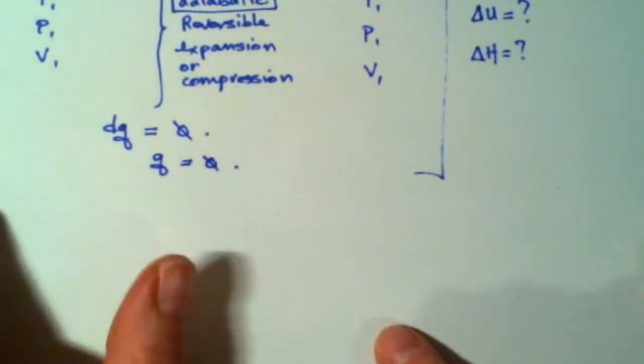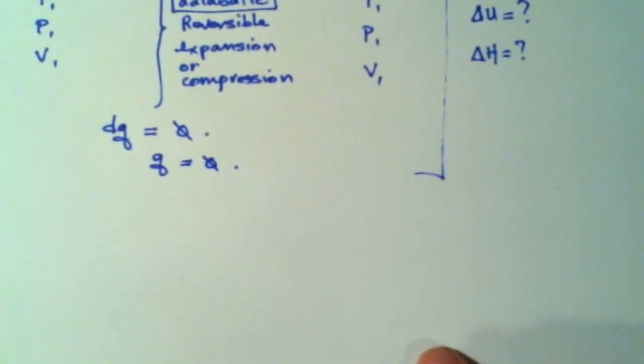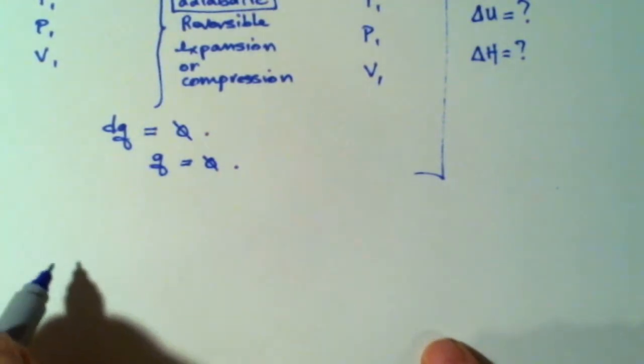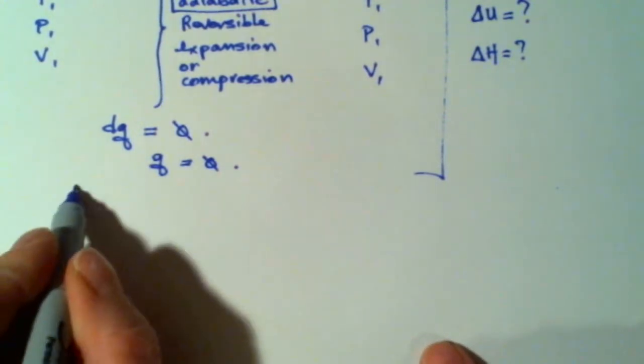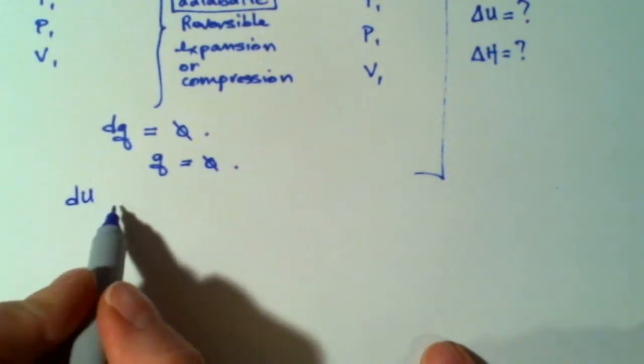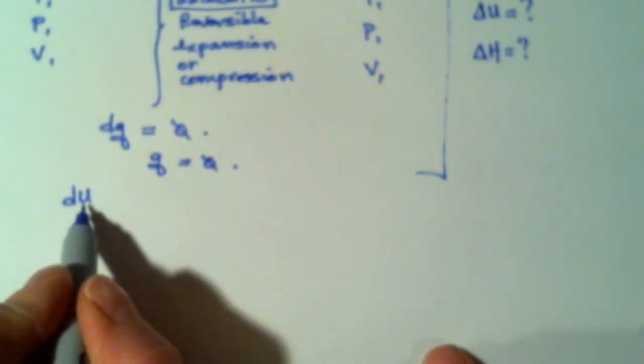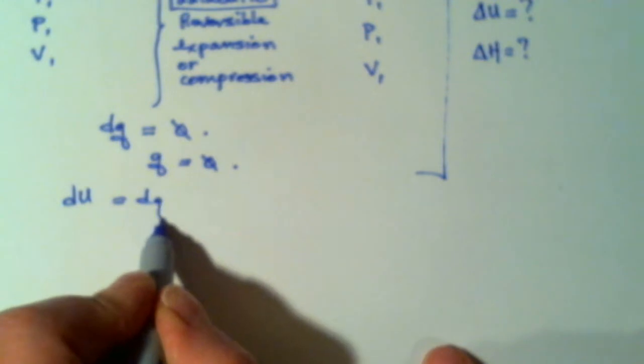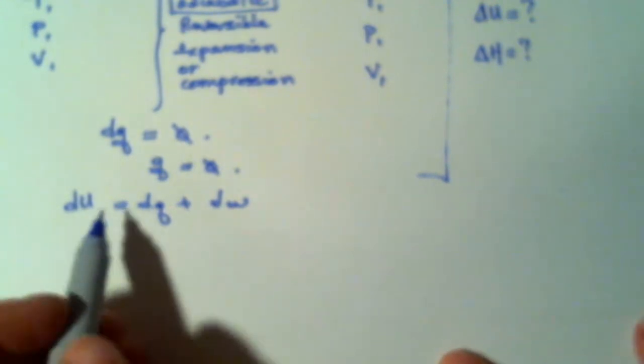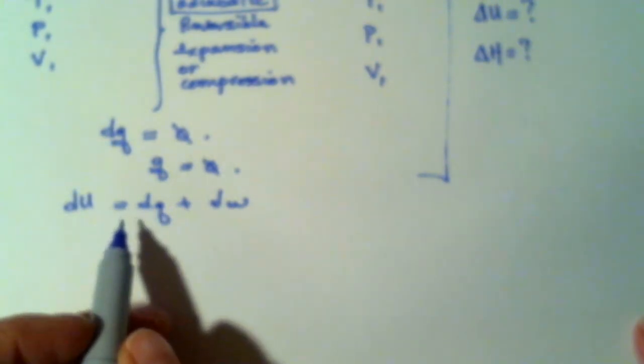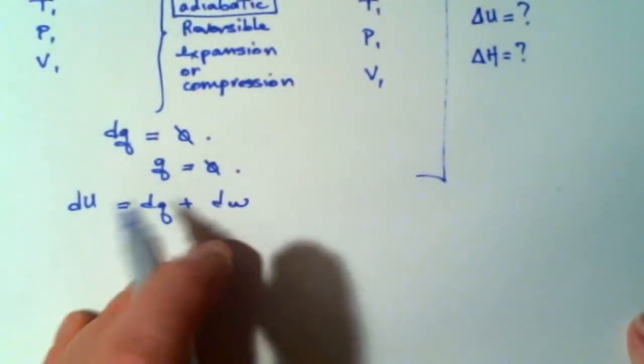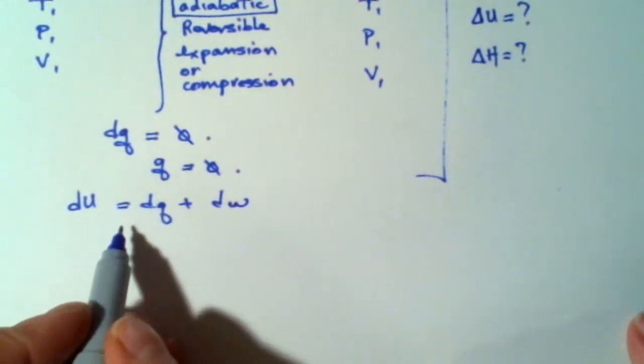So where do I go after that? Should I think about work right away or internal energy? I would say just think about the first law and write it out. It's always a great place to start once you've noted the condition and its consequence. So du is equal to dq plus dw.